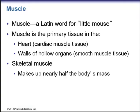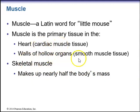So what is muscle? Muscle is derived from the Latin word for 'little mouse.' We know that muscle is the primary tissue in the heart, as well as the walls of hollow organs. We also have skeletal muscle tissue, which makes up nearly half the body's mass. With the heart, we have cardiac muscle tissue. Within the walls of hollow organs, we have smooth muscle tissue.